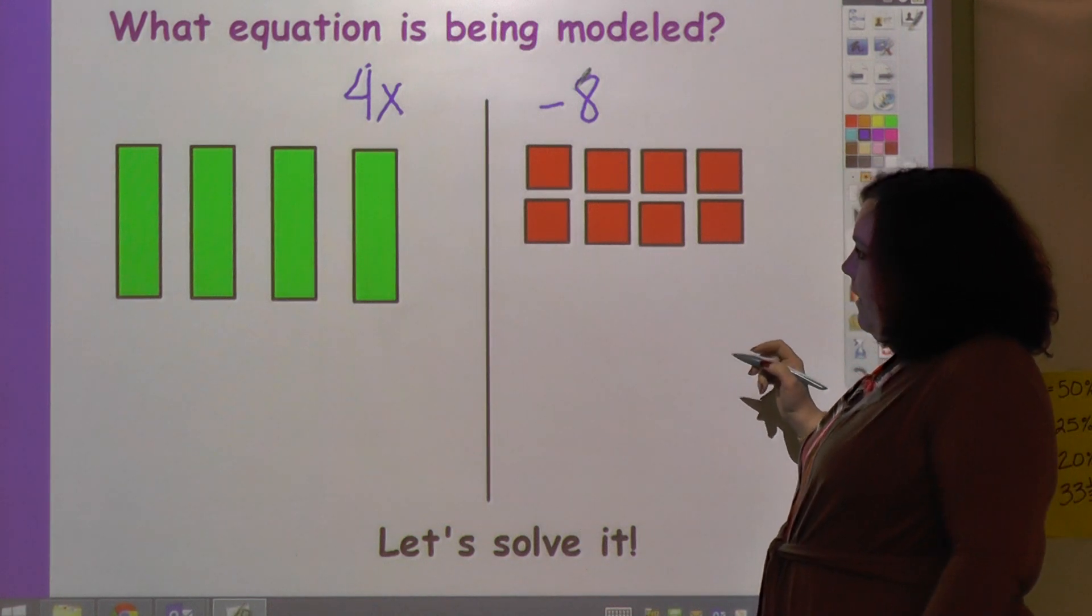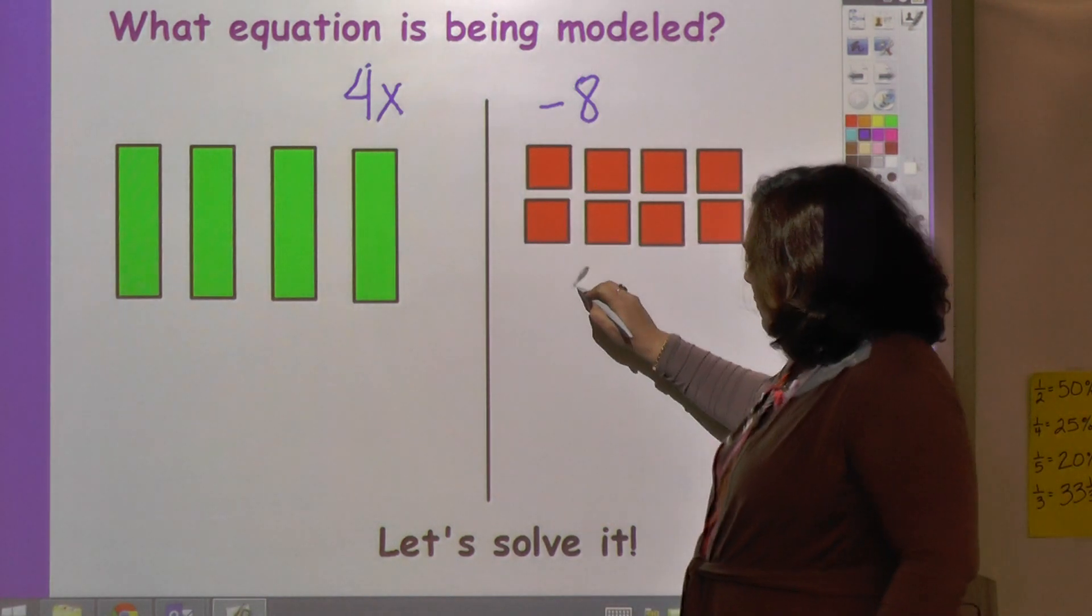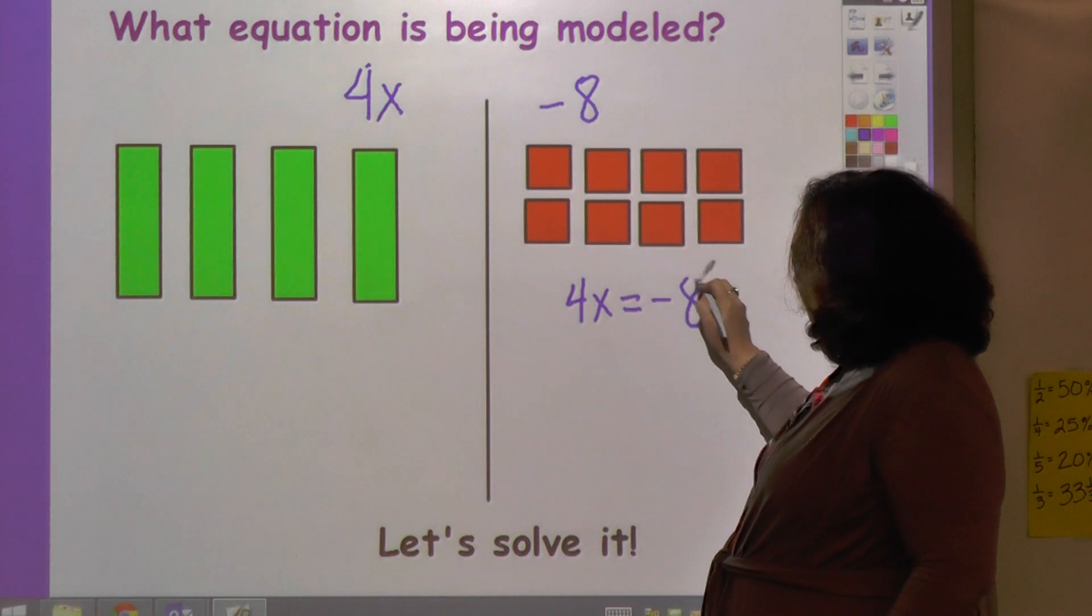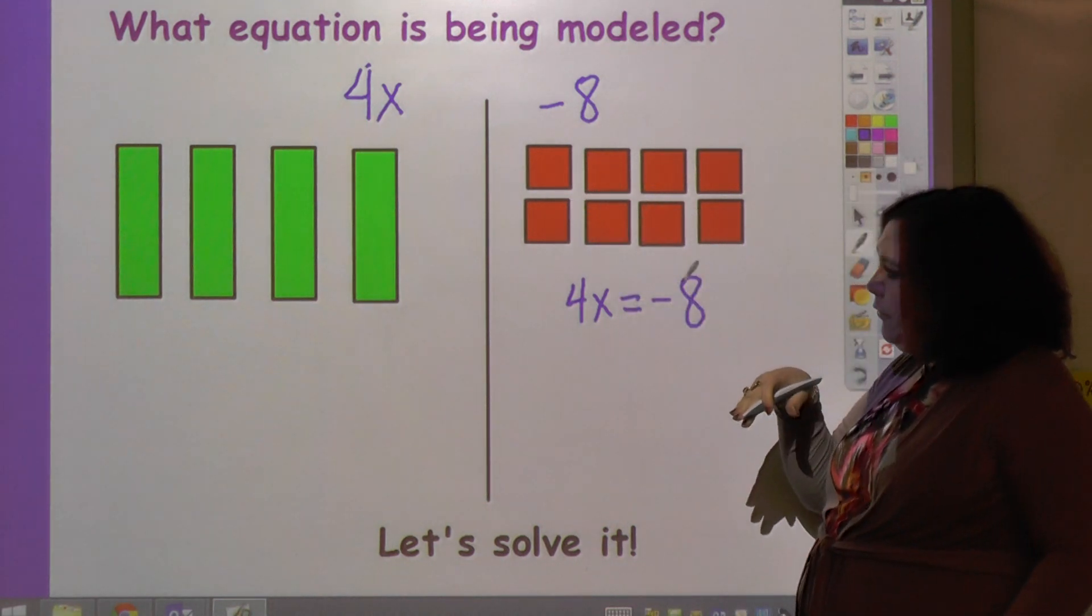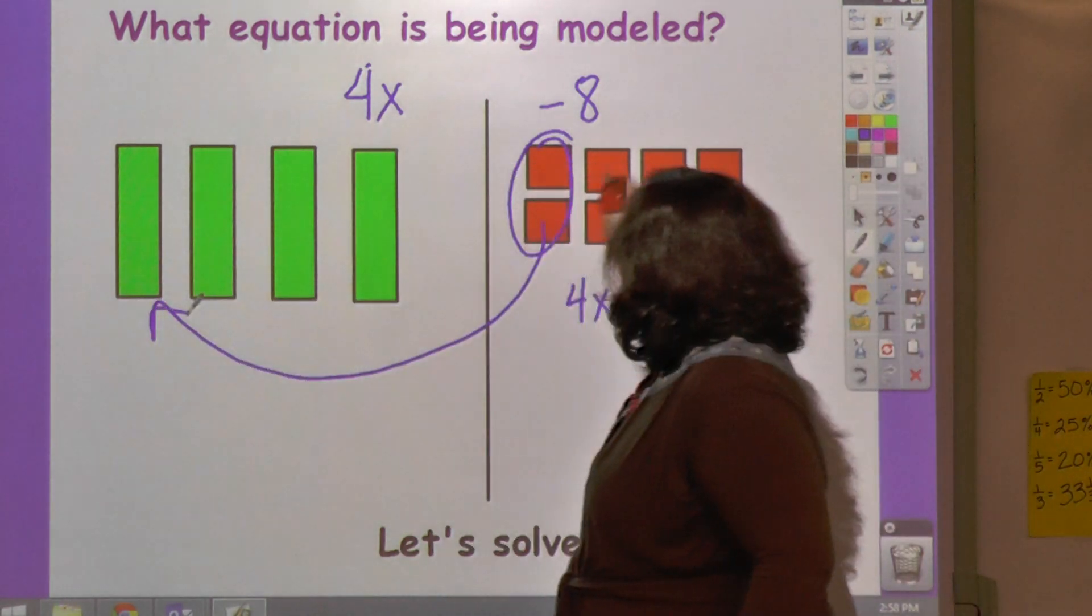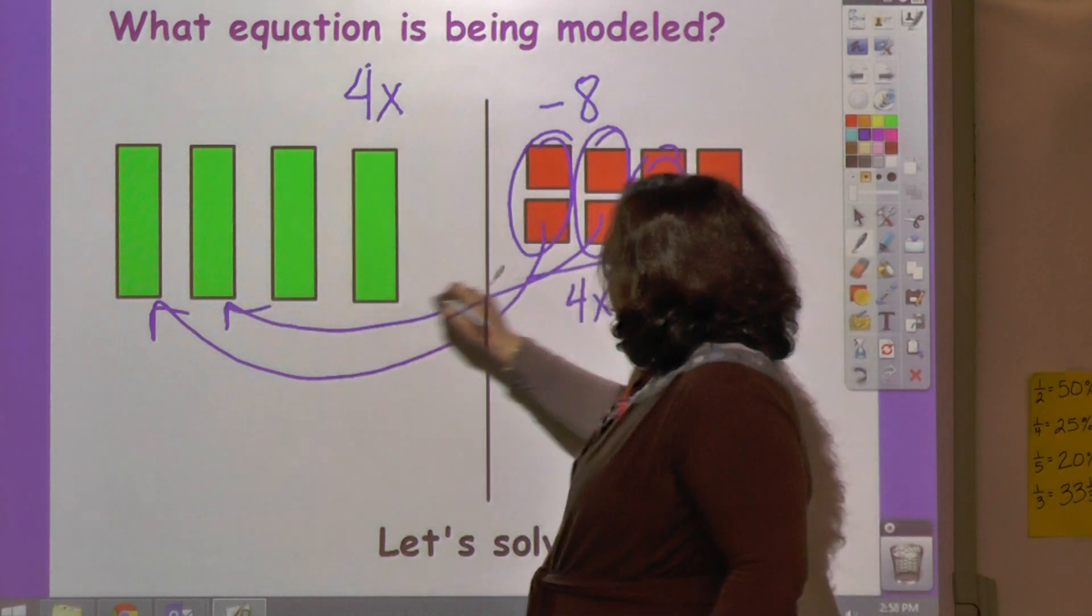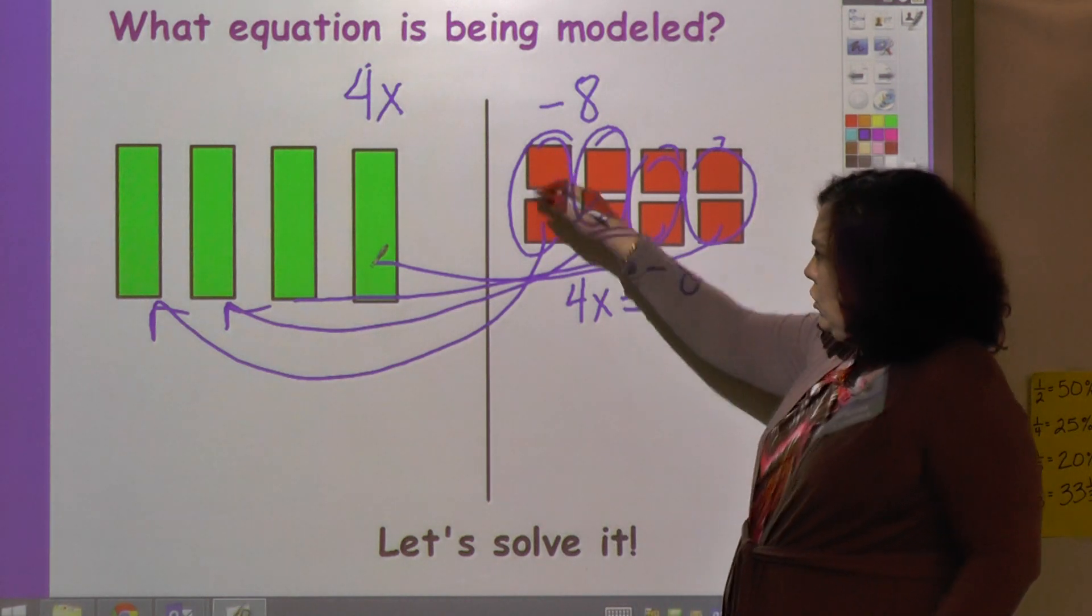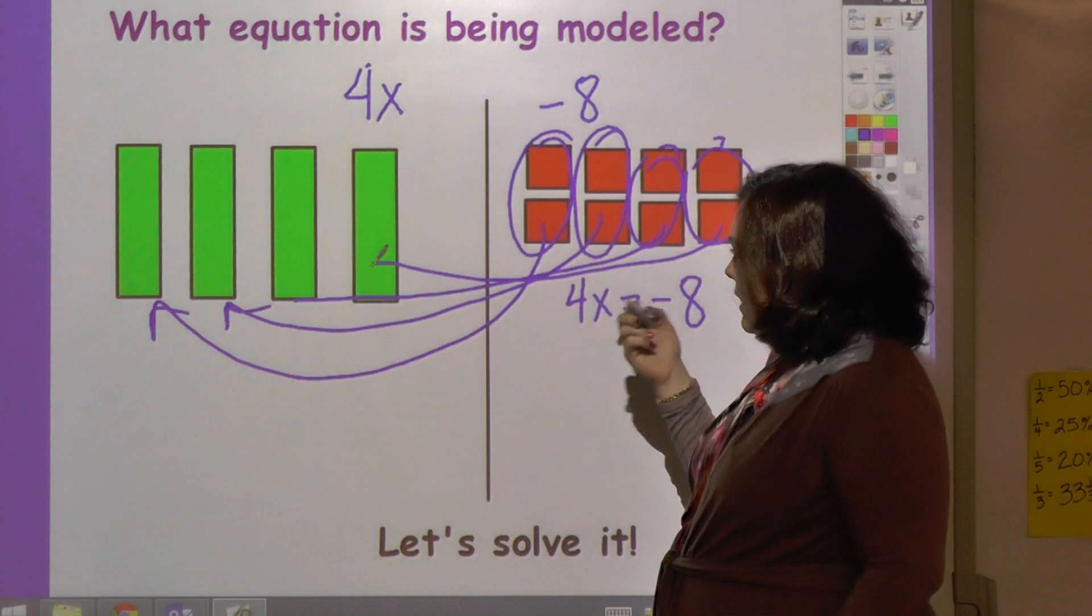So if I'm to solve this, then 4x equals negative 8. That's what's being shown here, that's what's being modeled. And so 2 of these would go here, and 2 would go here, and so forth. That of course is 2 negative going into each one. So that's my answer.